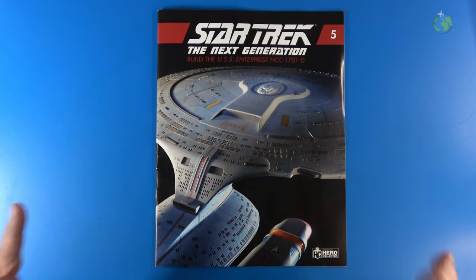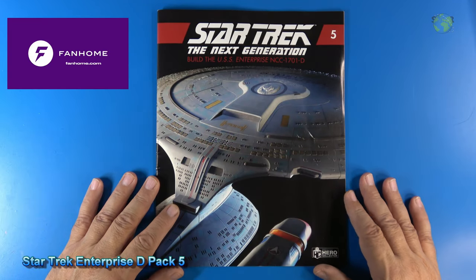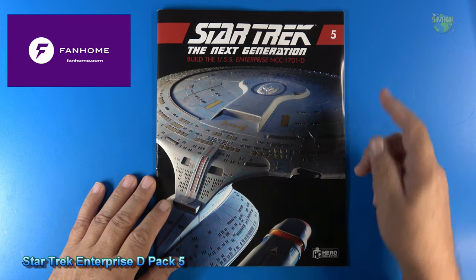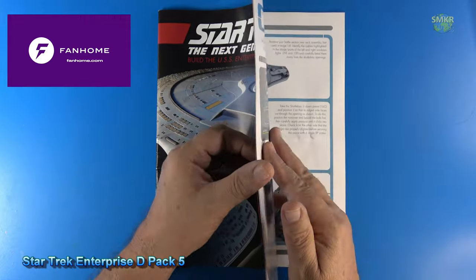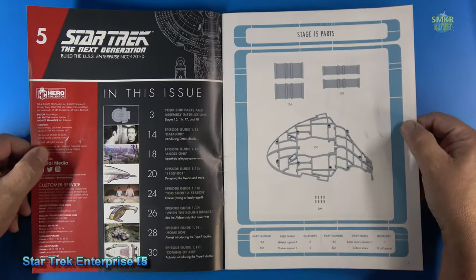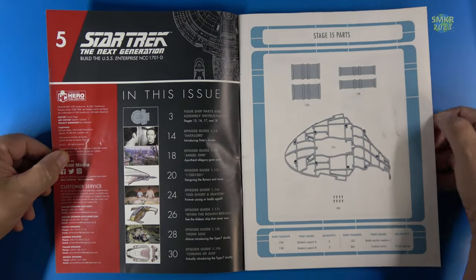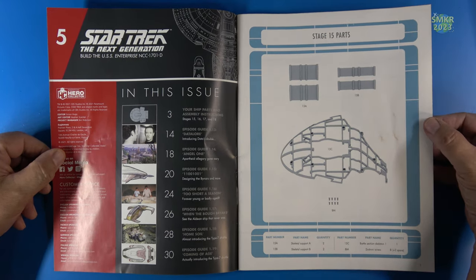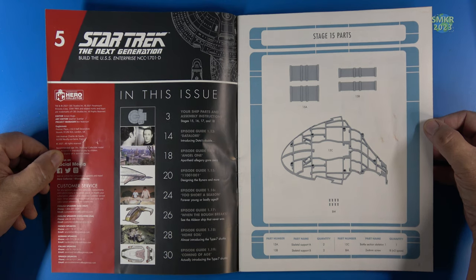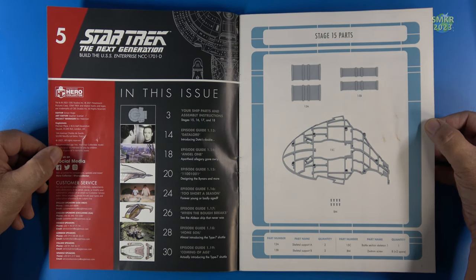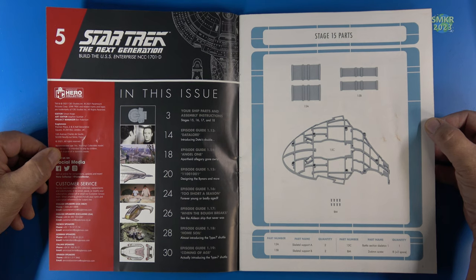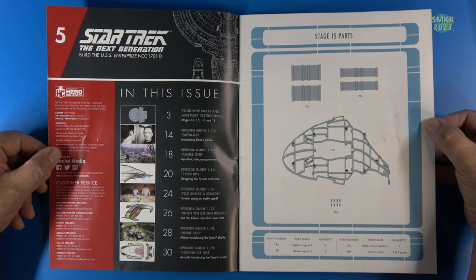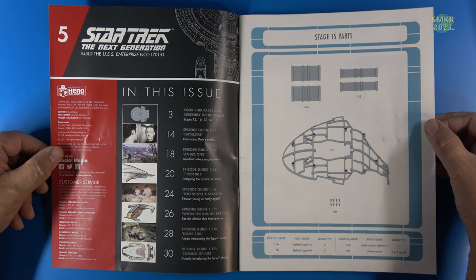Welcome back to another installment of Build the Enterprise D by FanHome. I'm working on pack five, or issue number five, stages 15 through 18. I'll be working on the upper skeletal frames, the cobra neck a little bit, and our first upper lighted panel for the upper saucer area. I'm super excited to get started on that.